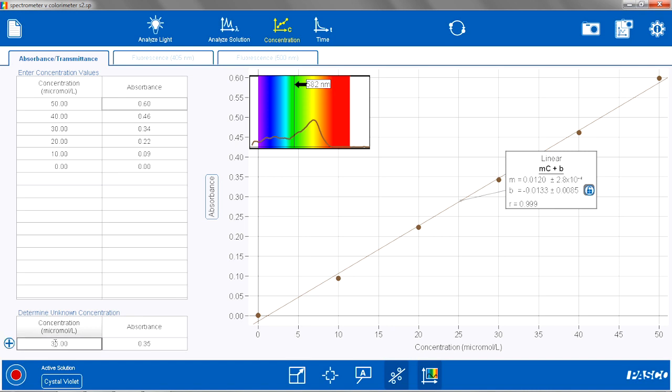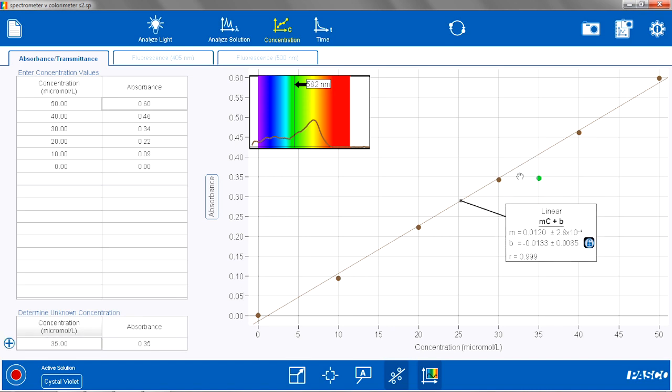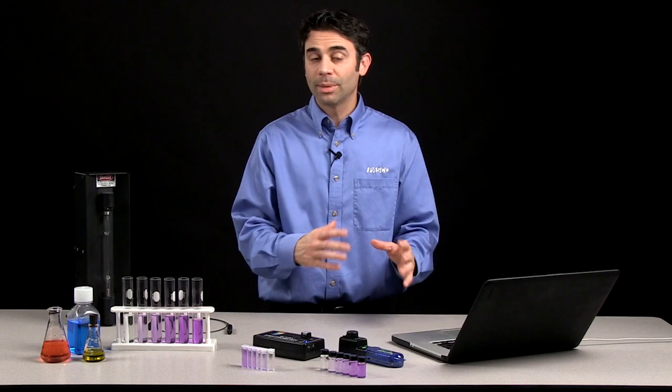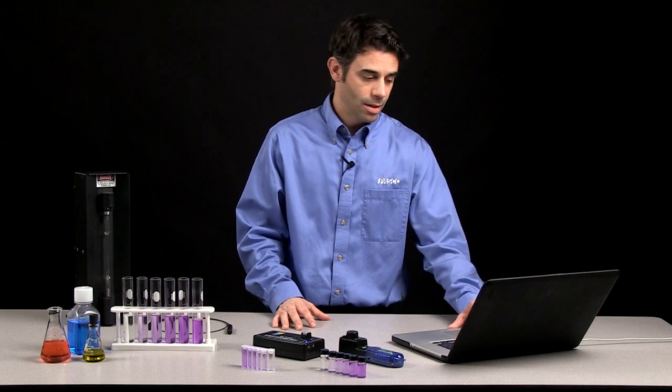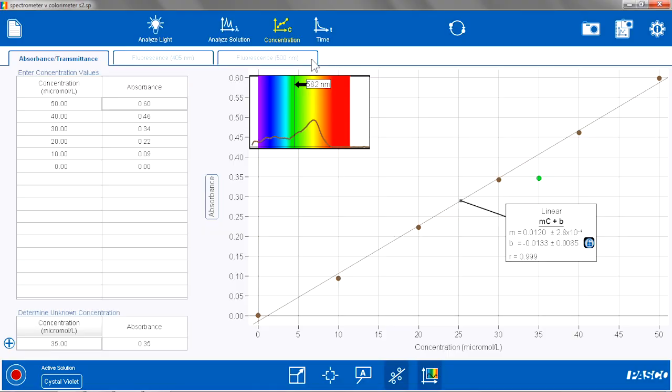And then that unknown value is automatically added to the graph, and the students can get an idea if their estimation or calculation was correct, so they get a little bit of student feedback. The other nice thing about this page is that there is a built-in live scan, so you see the full spectrum at all times. So you can see that full spectrum changing.